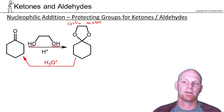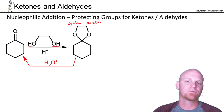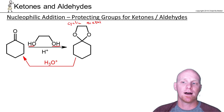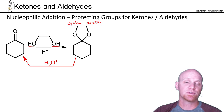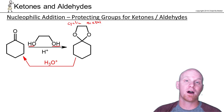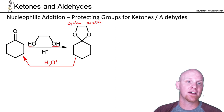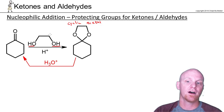It turns out the equilibrium constant for forming these is much more favorable just due to entropic effects. You've got one less reactant, the same number of products — it's entropically more favorable than having to add two equivalents of an alcohol instead of just one equivalent of ethylene glycol.